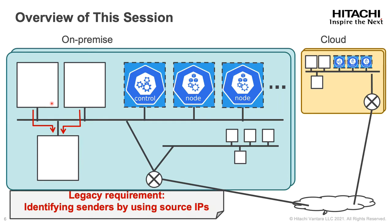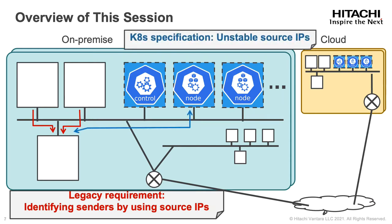Some legacy systems require that they can identify senders by using source IPs. In other words, they detect who sent packets by the source IPs of the packets. Kubernetes specification doesn't define source IPs from Kubernetes cluster to be unique and stable ones. So we are not sure which IP address or set are source IPs when receiving packets from a Kubernetes cluster. As a result, the legacy requirement of identifying senders by using source IPs and the Kubernetes specification of unstable source IPs conflict when used together. This is the issue that I will focus on in this session.